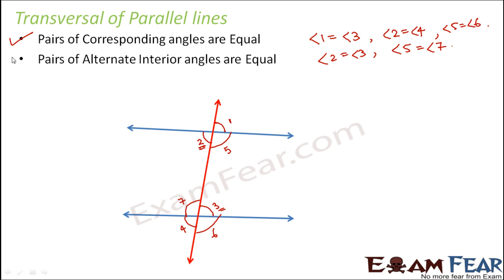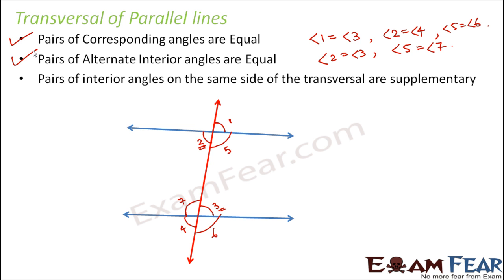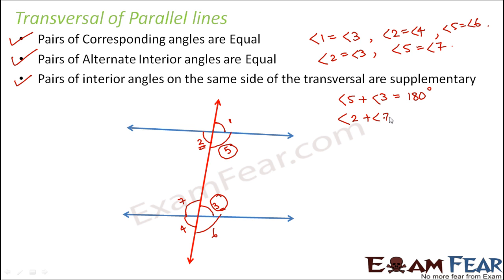These relationships hold true only in case of parallel lines — only when the transversal is intersecting parallel lines. Third, pairs of interior angles on the same side of the transversal are supplementary. Angle 5 and angle 3 are interior angles on the same side, so angle 5 plus angle 3 equals 180 degrees. Similarly, angle 2 plus angle 7 equals 180 degrees.